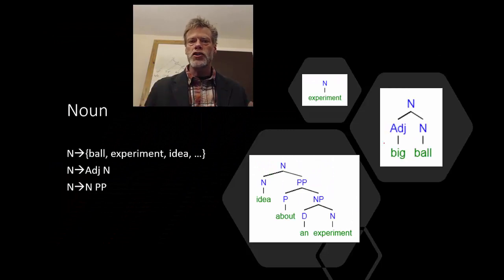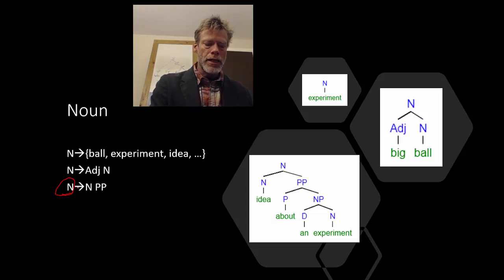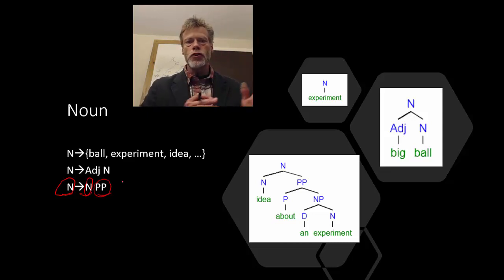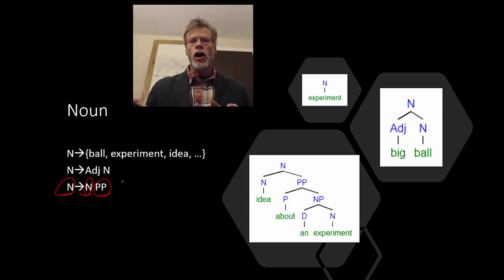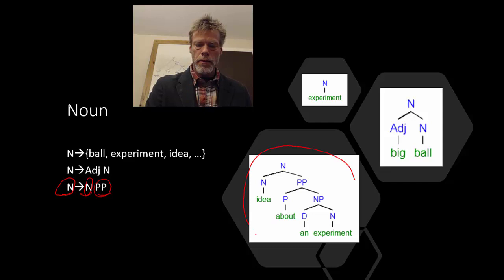The first phrase structure rules we're going to be looking at are for nouns. When you see something on the left of the arrow — for example, this rule that takes us from a noun and has a noun and a preposition phrase — whatever is on the left of the arrow is the mother, and whatever is on the right is the daughter or daughters. So we're saying we take this noun and it will have two daughters: a noun and a preposition phrase. We see that represented in this tree here.